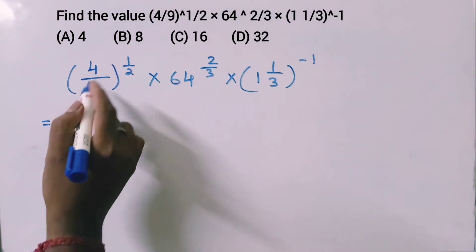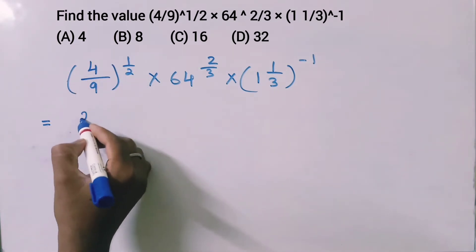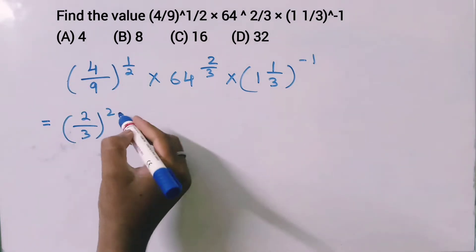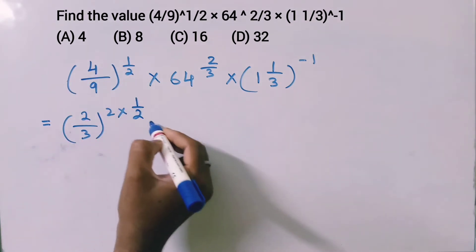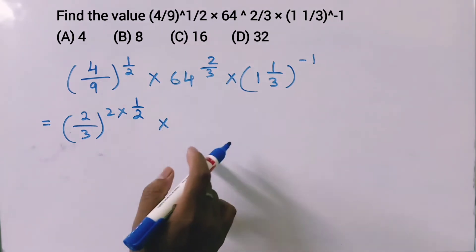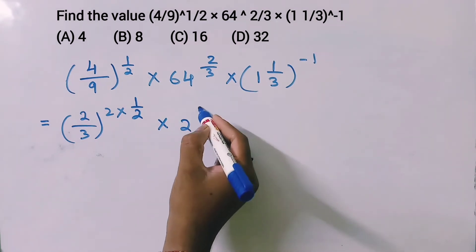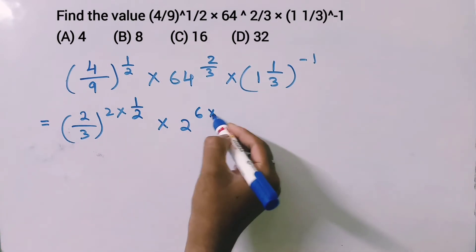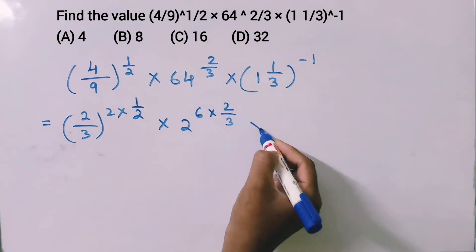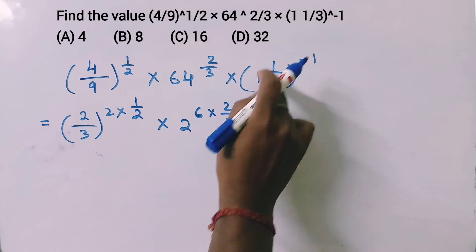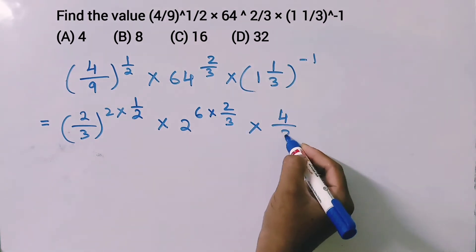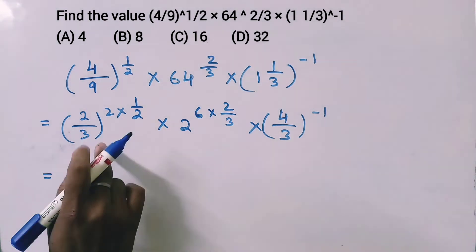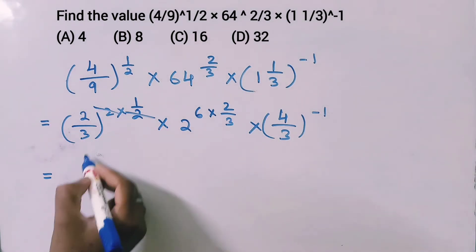Now, 4 by 9 to the power 1 by 2 equals 2 by 3. Then 64 to the power 2 by 3: 64 is 4 to the power 3, so 4 to the power 3 into 2 by 3 gives 4 to the power 2, which is 16. And 1 and 1 over 3 equals 4 by 3, so 4 by 3 to the power minus 1.